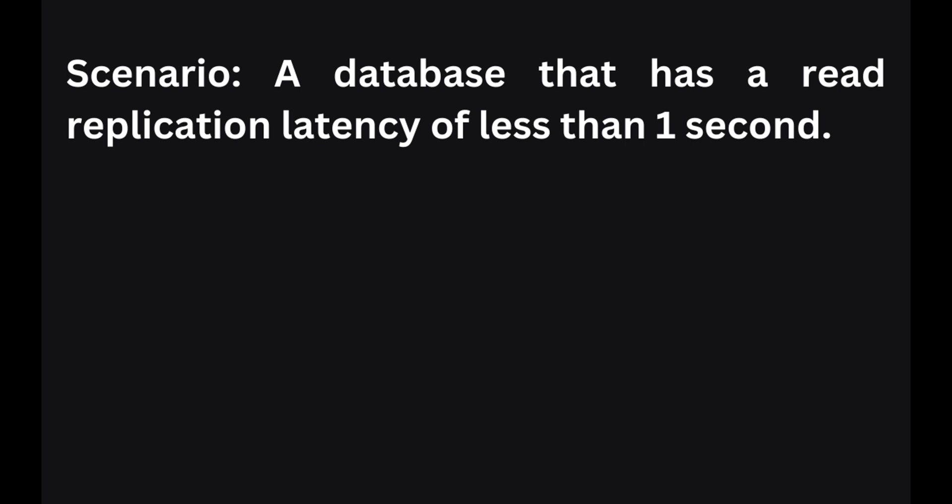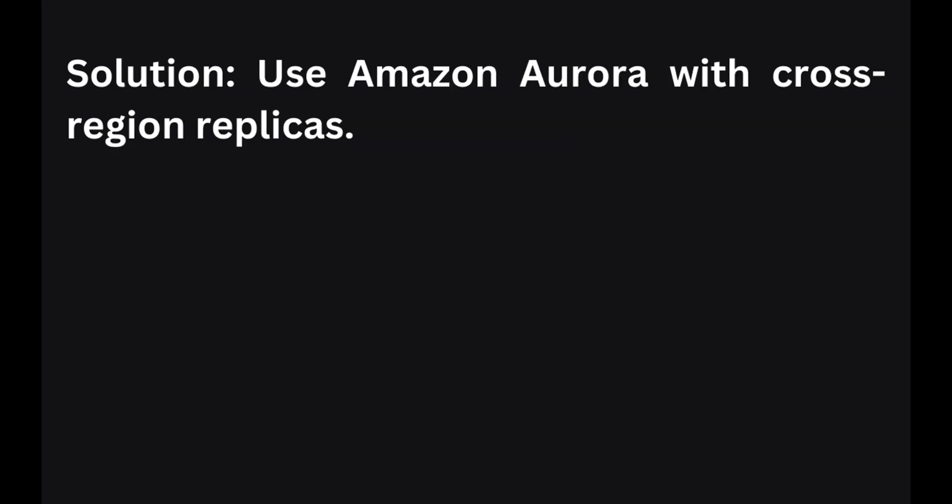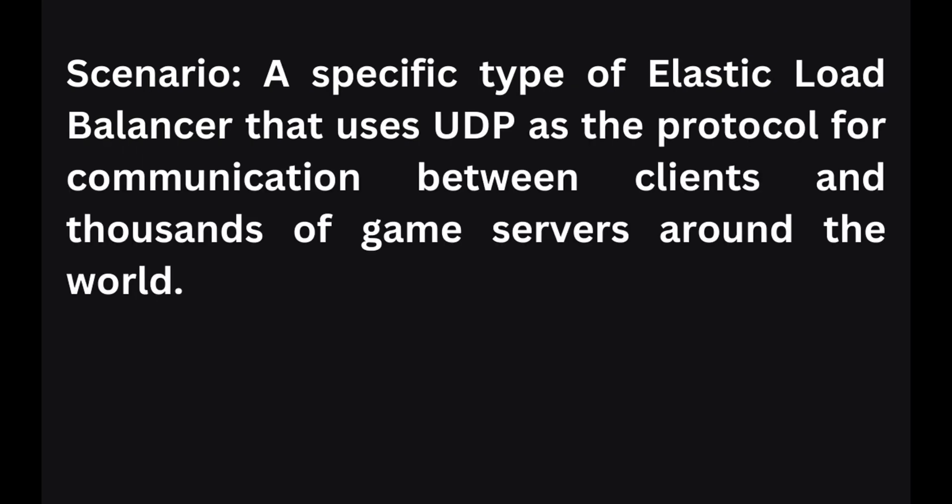In the next scenario, you require a database with read replication latency of less than one second. To achieve this, you can use Amazon Aurora with cross-region replication. Aurora provides fast and efficient replication capabilities, ensuring low latency for read operations across multiple regions.